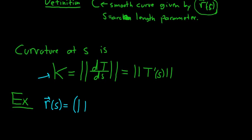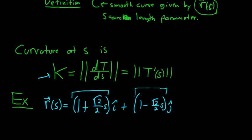So this is 1 plus square root of 2 over 2S i hat, plus 1 minus square root of 2 over 2S j hat. So if you work this out, like if you call this X and you call this Y, and you rewrite this in rectangular coordinates, you'll see that this is a line. So a line doesn't bend at all.